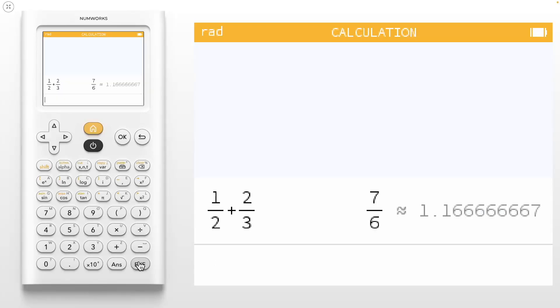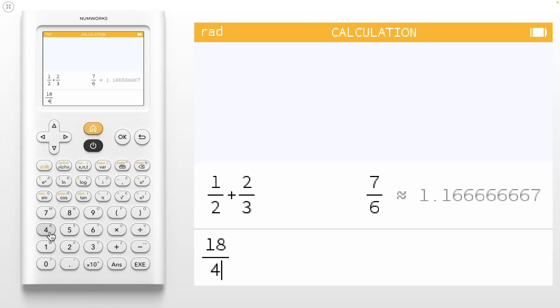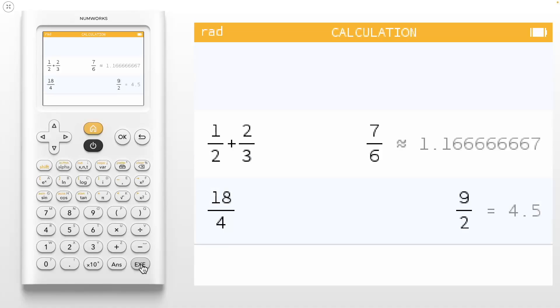Our calculation is now viewable in the calculation history. Notice that we received both the exact result in fraction form and the decimal approximation. If we instead evaluate 18 divided by 4, we again receive the fraction and decimal form, but here our notation is different. Instead of using the approximately equal to symbol, like in our first computation, we have exactly equal to.